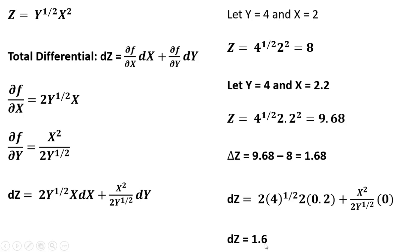The dz equals 1.6, which is a pretty good approximation of what we found by evaluating the equation twice at one set of values and then another set of values. Okay, I hope you found this video helpful.